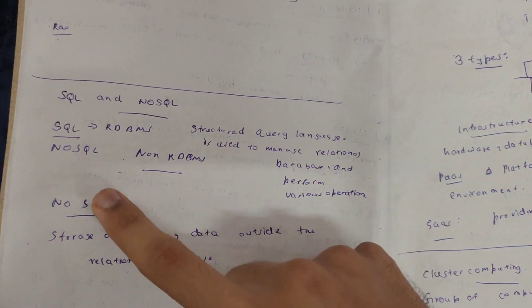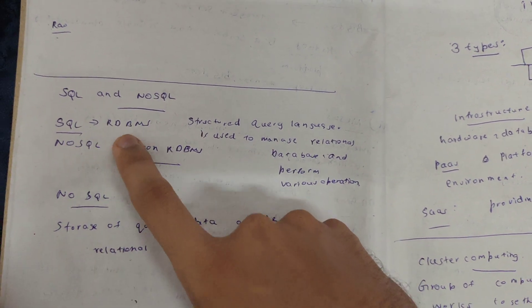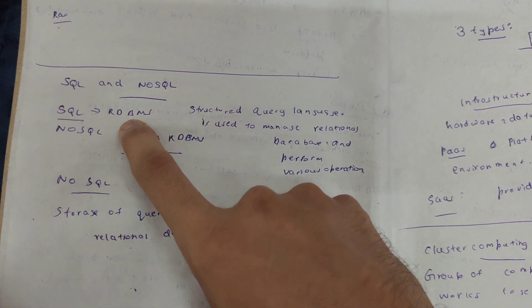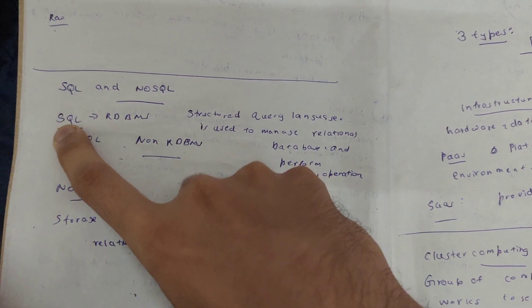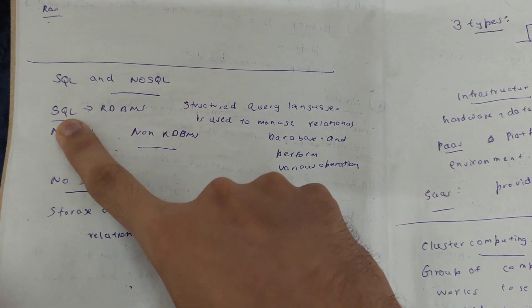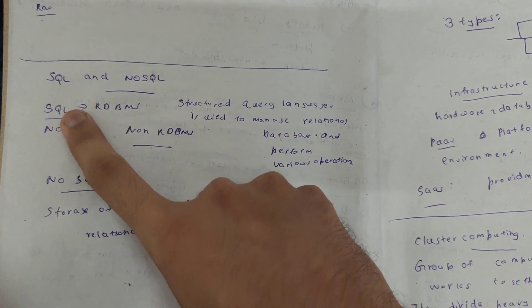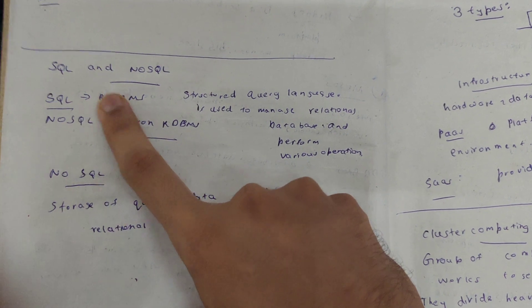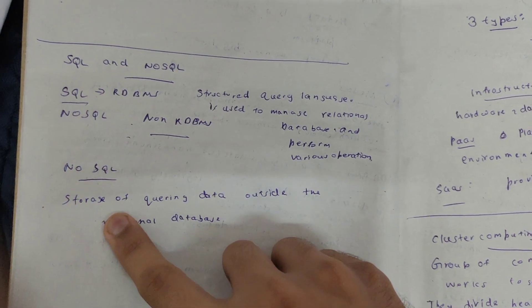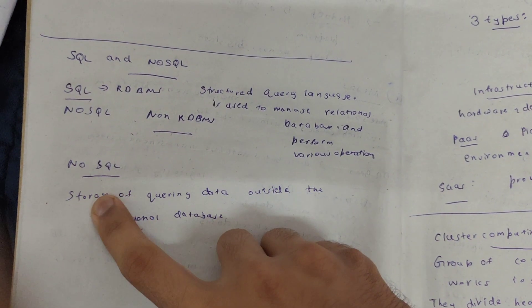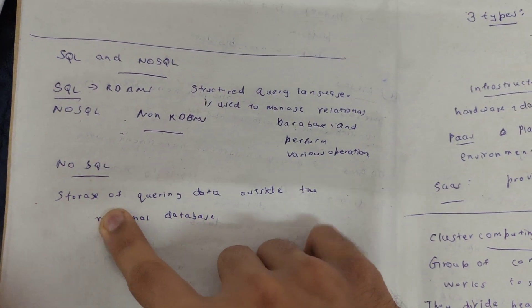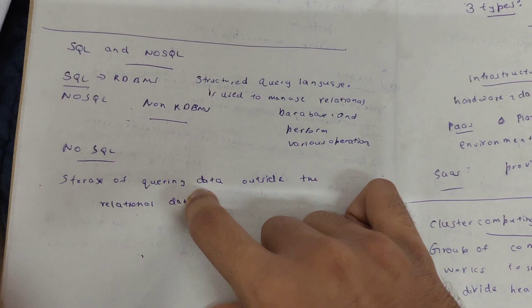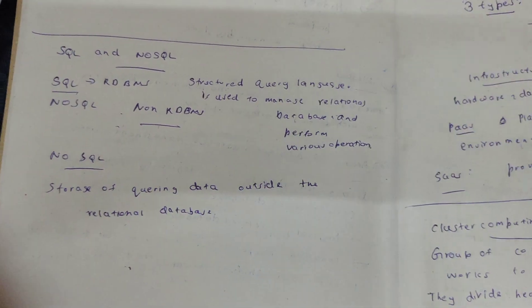SQL and NoSQL — SQL is a simple example using RDBMS, Relational Database Management. SQL stands for Structured Query Language, used to manage relational databases. NoSQL means not SQL — it is for storage and querying of data that is not stored in a relational database.